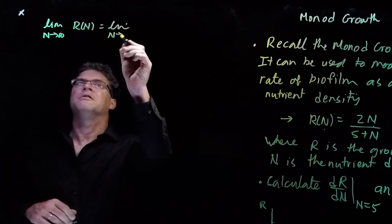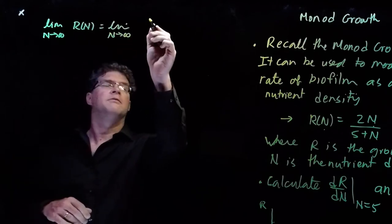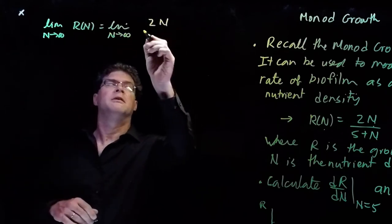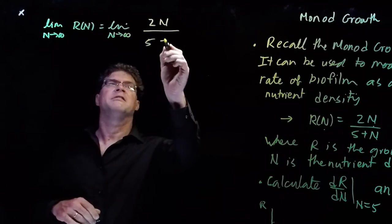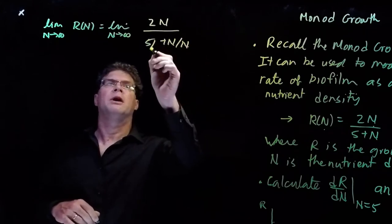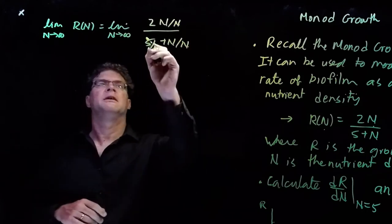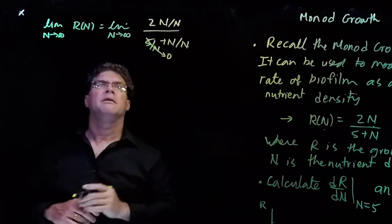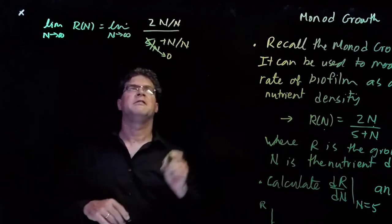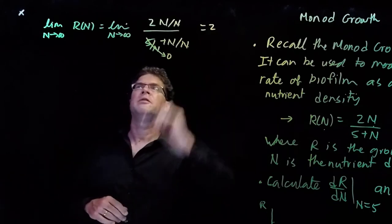That's the limit as n goes to infinity of 2 times n over 5 plus n. And we can divide the top and the bottom by the highest power, which is n. And this term goes to 0, and the n's cancel. So we get that the limit is 2.